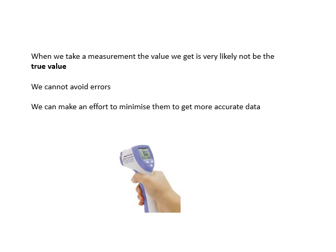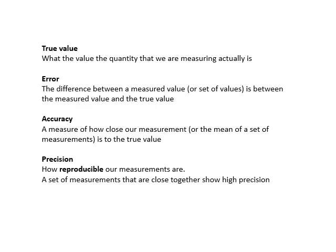We can do our best to minimize them, but we can't avoid them. We can make an effort to minimize them and get more accurate data. The true value is the actual value that we are trying to measure. Error is the difference between the measured value or set of values and the true value.